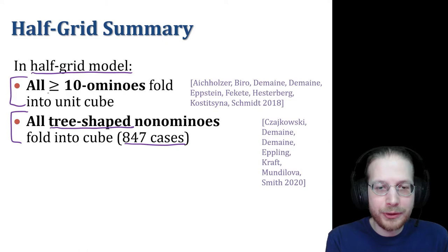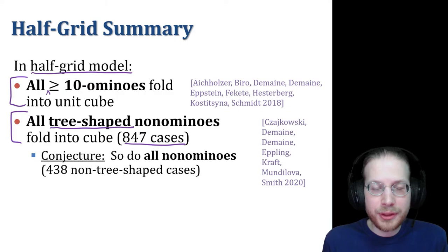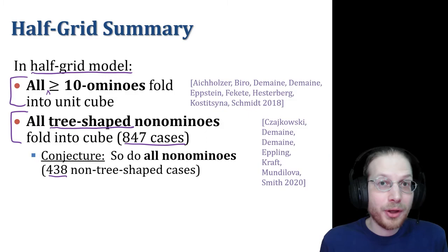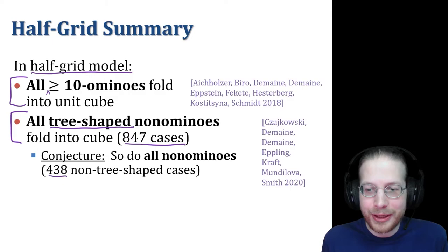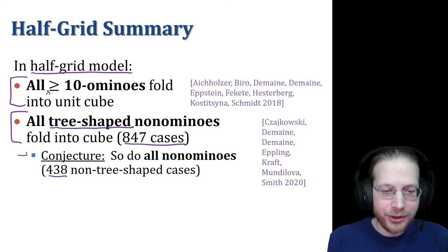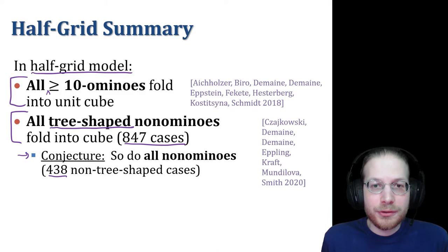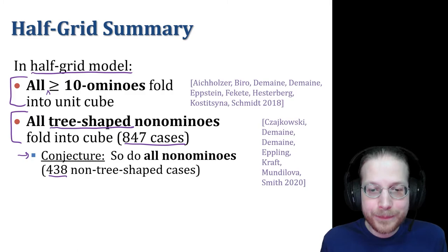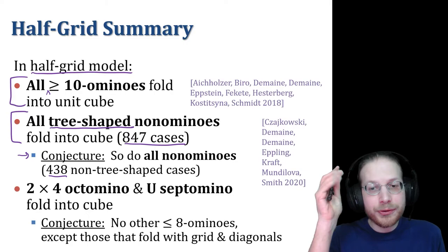Previously we had solved all size 10 and larger, and now we've solved all of size 9, because among the 847 possible tree-shaped nanominoes, previous work had solved with the grid and diagonal model all but 10 of them. And then in the half-grid model, we now have a way to fold all 10 of those remaining examples. So together, this tells us that all tree-shaped 9 and larger polyominoes fold into a cube, which is pretty cool. Now, there's one difference here, which is that we have this tree-shaped qualifier in the second result. And so the conjecture is that, in fact, all nanominoes, and therefore all polyominoes of size 9 and larger, fold into a cube.